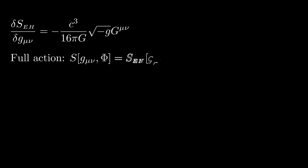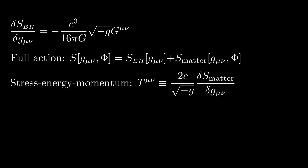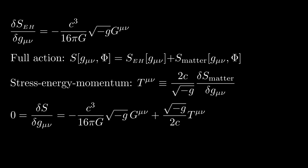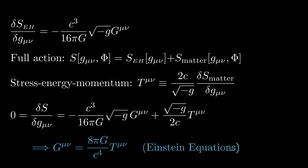In general, the full action includes a contribution from the matter fields. The matter action depends on the matter fields, which I've denoted by a capital letter phi, and also the metric. The stress-energy momentum tensor for the matter fields is defined by 2C over the square root of minus G times the functional derivative of the matter action with respect to the metric. By setting the functional derivative of the full action equal to 0, we have this result, which of course yields the Einstein equations: G mu nu equals 8 pi G over C to the fourth times T mu nu.